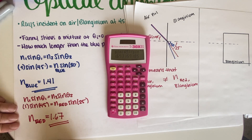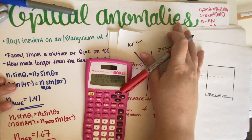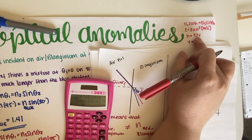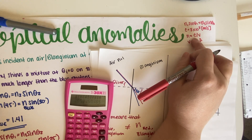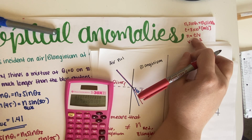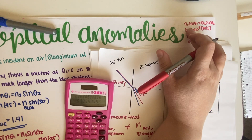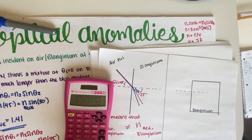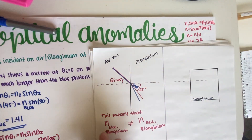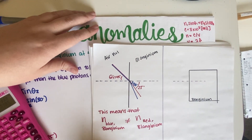This essentially means that red light is going to be slower than blue light, because by the definition given on the quiz — n = c/v — the higher the index of refraction, the slower the velocity. Now that we've found both indices, we can go into the second part of the problem.